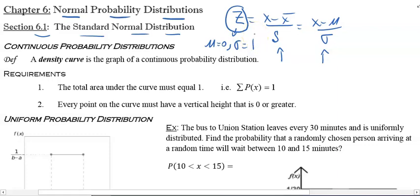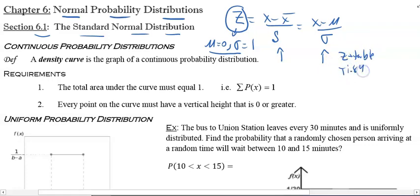That becomes very easy to work with. We use the z-table, or in our case the TI-84, which already has the z-table built in. So we're figuring out: given a score, how many standard deviations is that score above or below the mean?